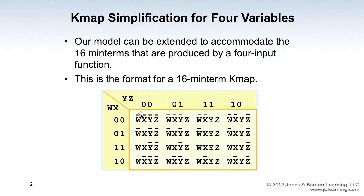The different minterms are placed into different cells. For example, WX and YZ with W-not, X-not, Y-not, Z-not goes in the first cell. WX and YZ corresponding to all variables equal to one goes in the cell for 11 and 11 — that is minterm WXYZ. Another example: WX-not corresponding to 10, YZ-not corresponding to 10, and so on. This is the format of the 16-minterm KMAP for four input variables.